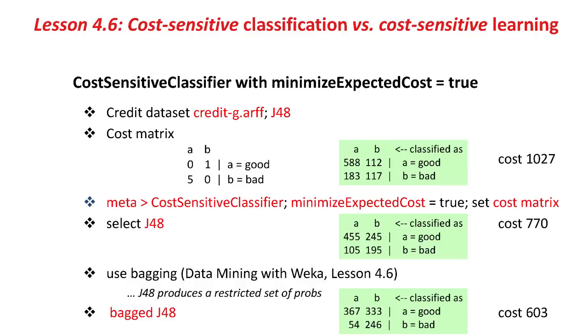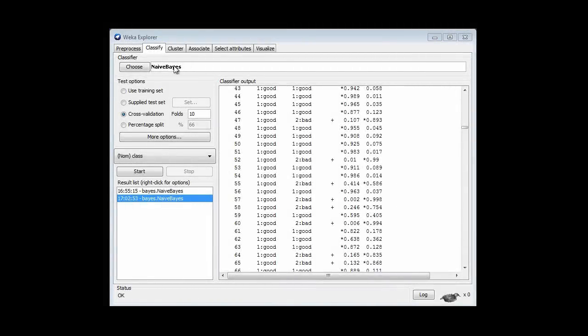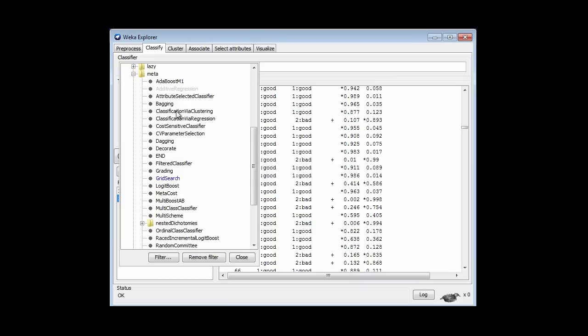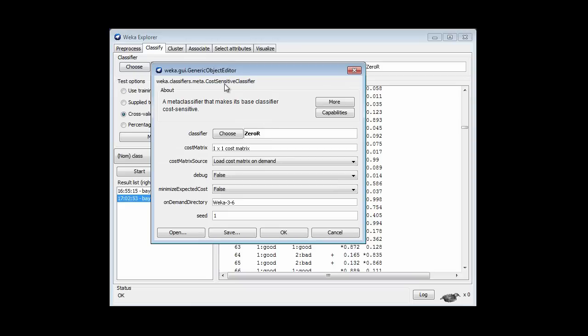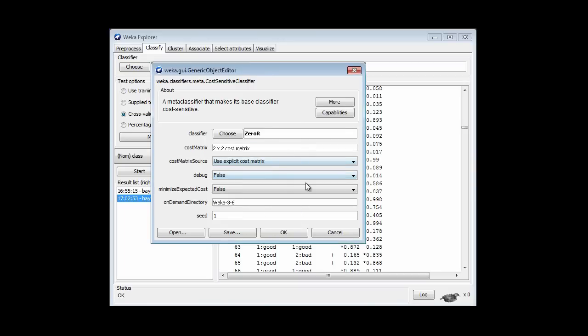So I've got the credit dataset open. If I just run J48, with that cost matrix, I get a cost of 1027. So over in Weka here, I'm going to select the cost-sensitive classifier, meta cost-sensitive classifier, and I'm going to configure that to have the appropriate cost matrix. So I need to put in the cost matrix here, a 2x2 cost matrix, and I want the one we've been using all along with a 5 there. Then I want to set minimize expected cost to true, and that gives us cost-sensitive classification.